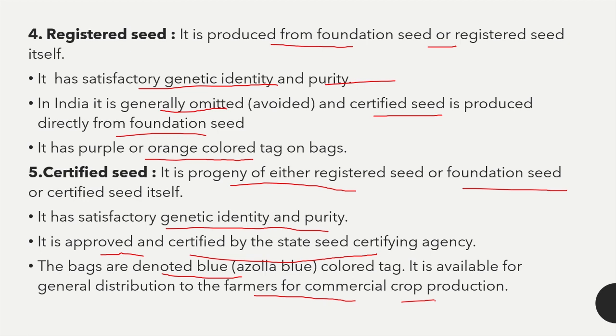To summarize the five classes of seeds: nucleus seed is produced first, from which breeder seed is made, then foundation seed, then registered seed, and finally certified seed.